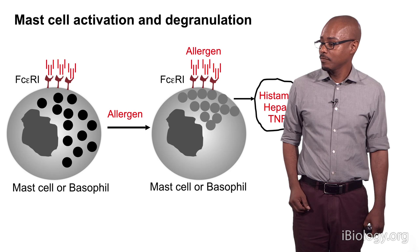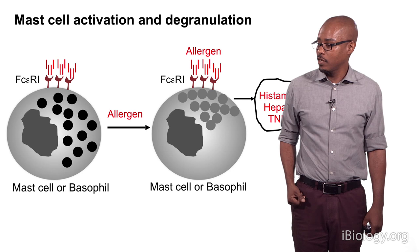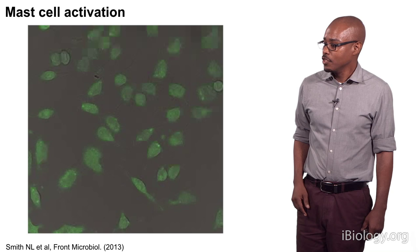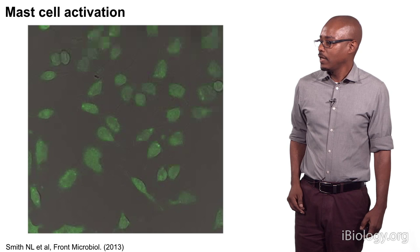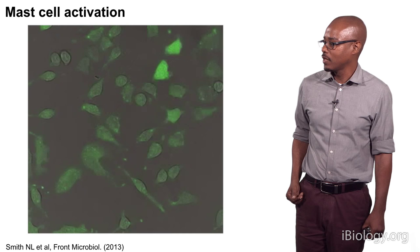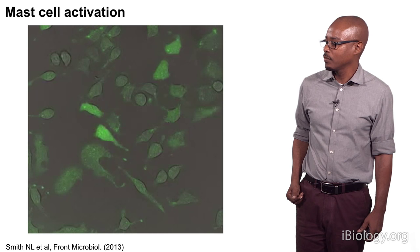The second time you get exposed to that peanut allergen, the allergen interacts with the IgE found on the mast cell and basophil, and it triggers degranulation, where they release all their contents and those contents start to have physiological effects. The first thing that happens when that allergen binds to the IgE on the receptor is the activation of calcium. In this image, antigen is added in the upper right-hand corner, and then the cells start to respond by increasing intracellular calcium, shown in bright green, as the cells get activated.